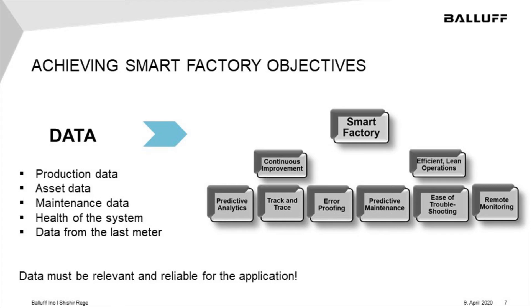In order to achieve any of these smart factory objectives, what we need is data — data about the production processes and what we call OEE. We also need data about our tools and assets: how they are calibrated, how many hours we have on those tools, when maintenance is due on certain machines, how end devices are performing, and whether they need tune-up or calibration. Whatever data we collect needs to be put in context — reliable and relevant information that we can act on.